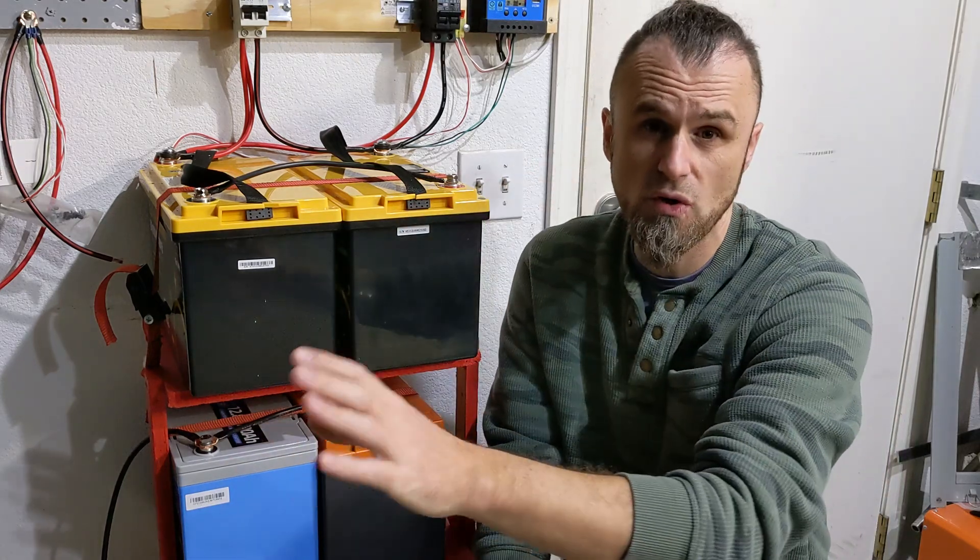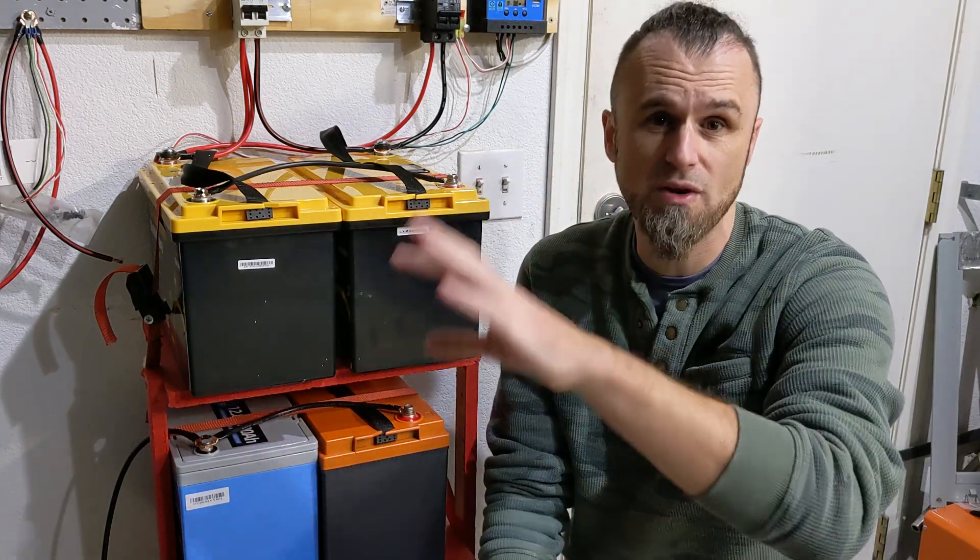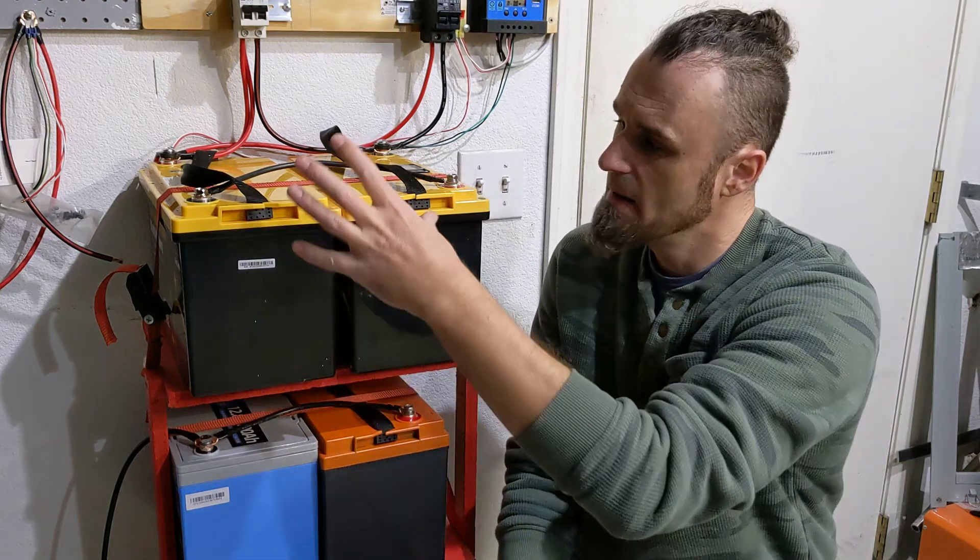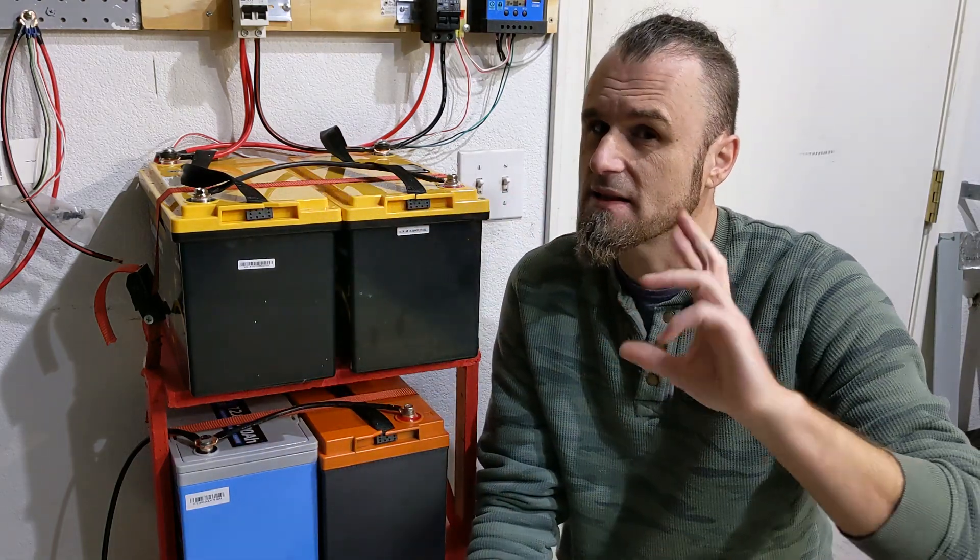So the charge controller is pushing 26 volts, 27 volts, 28 volts - whatever these need to be able to be charged - and there's always going to be a slight discrepancy.